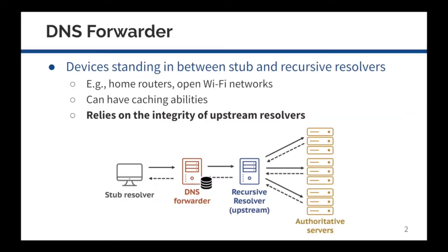Today's DNS infrastructure has been far more complex than its original design. DNS forwarders are devices standing in between stub and recursive resolvers. A typical DNS forwarder takes queries from DNS clients, and instead of performing lookups, it relies on an upstream recursive resolver to handle the resolution. DNS forwarders can serve as convenient default DNS servers with caching abilities and are widely deployed on residential network devices such as home routers. Despite their prevalence, there is still a lack of DNS forwarder implementation guidelines, and their unique position is exploited in our attack.